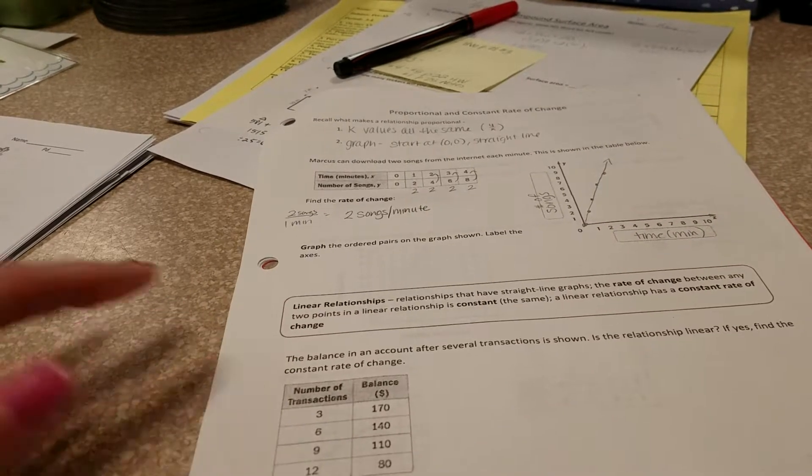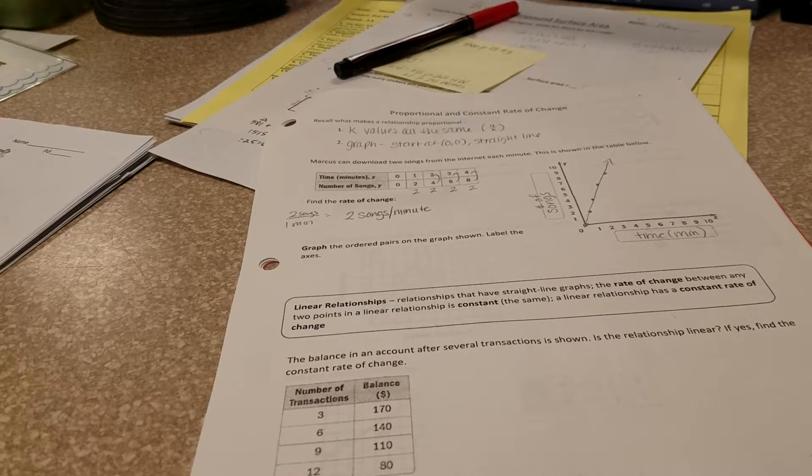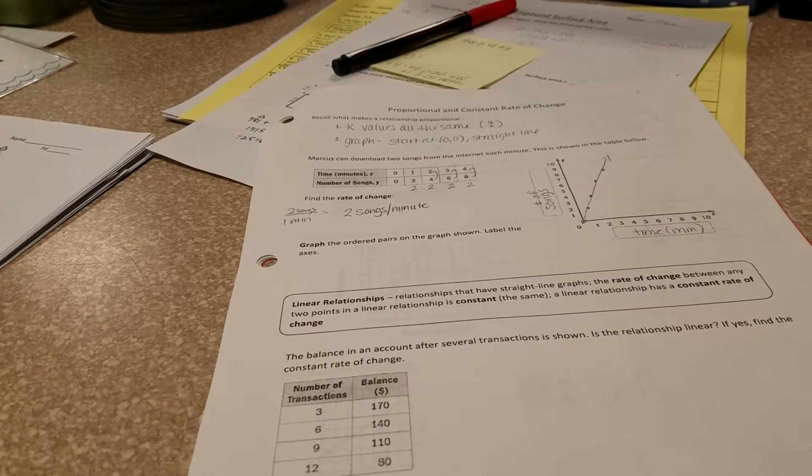Linear relationships are relationships that have straight line graphs. The rate of change between any two points in a linear relationship is constant. So a linear relationship has a constant rate of change.